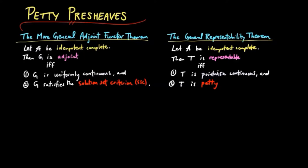We have already shown that G is uniformly continuous if and only if for each B object B, the pre-sheave B, B, G is pointwise continuous.